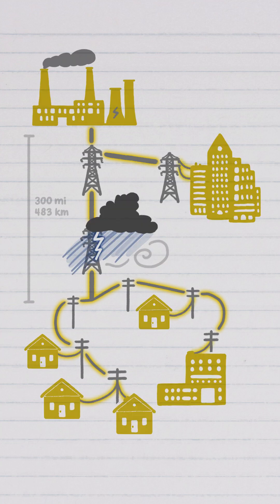During a storm or a heat wave, that transport can get interrupted, leaving hundreds of thousands of people without power.